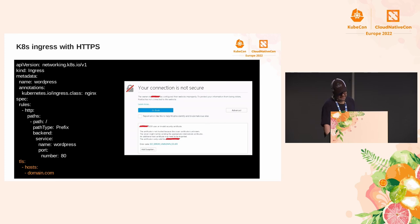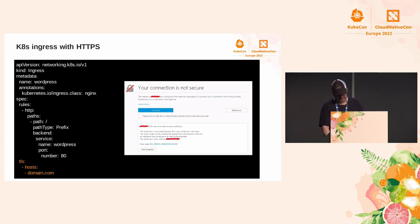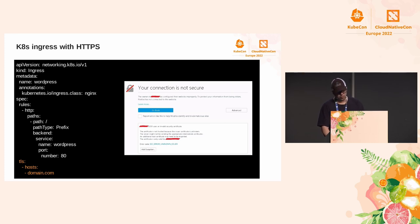When working with Kubernetes, the ingress exposes a web application within a cluster to the outside. However, the application is reachable over HTTP by default, which is not secure since traffic between the application and the client is not encrypted. The ingress can be configured to serve the application over HTTPS, working like a reverse proxy. You could configure a certificate in the ingress configuration file.